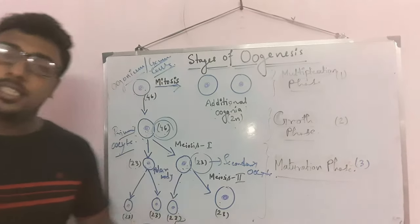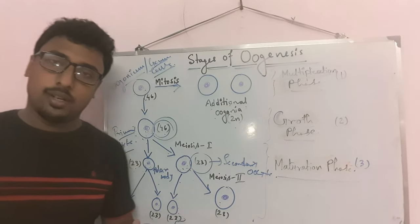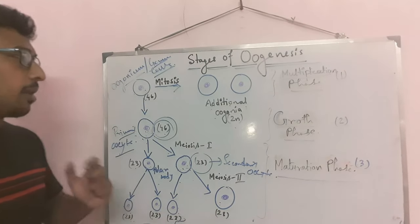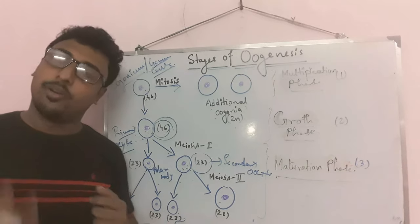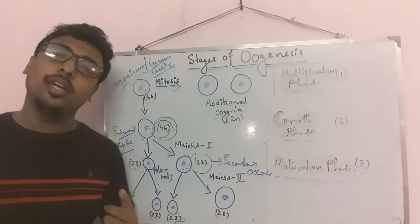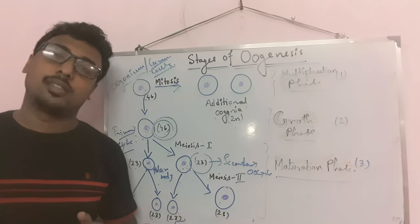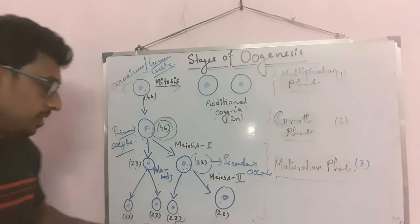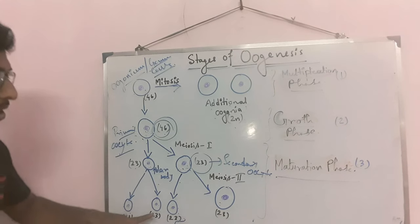The polar bodies will ultimately degenerate — they will be destroyed and passed out with the menstruation cycle. So these polar bodies are formed during the process and are shed along with the menstrual cycle.